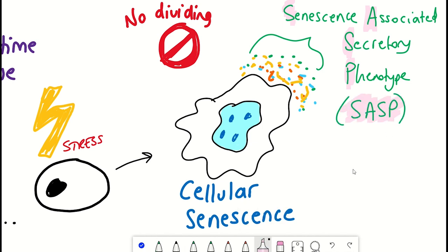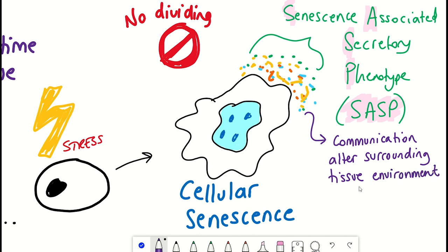This refers to soluble factors that are secreted from senescent cells that include a smorgasbord of components. These components influence the surrounding tissue environment and enable communication between cells. For example, it includes components like inflammatory factors that are thought to be able to recruit and activate immune cells that could down the line clear the senescent cells.